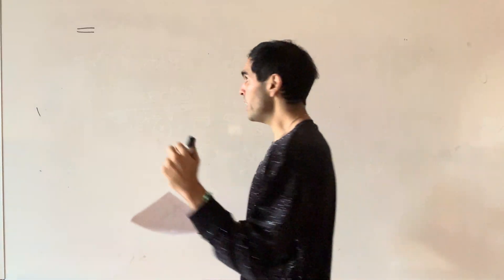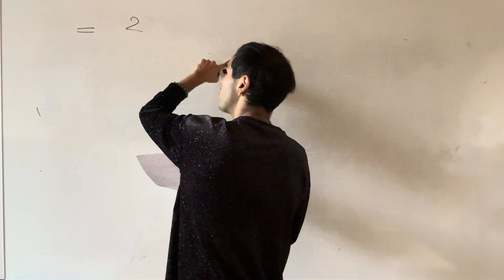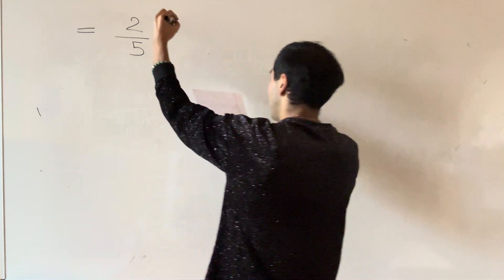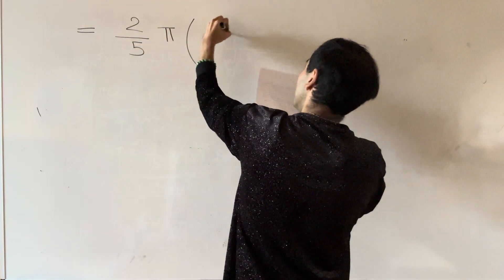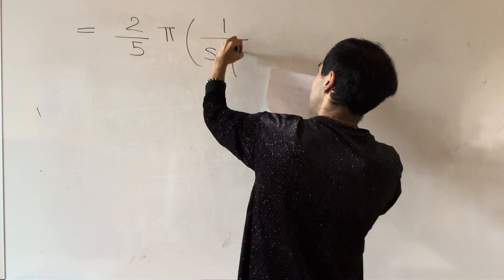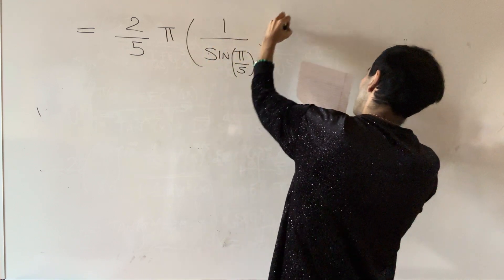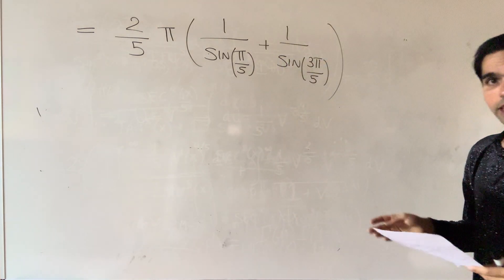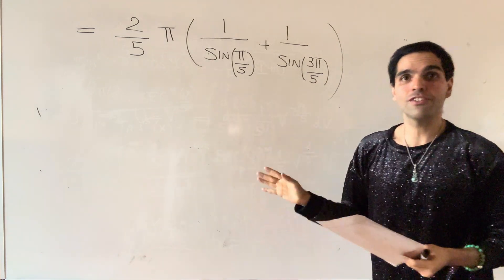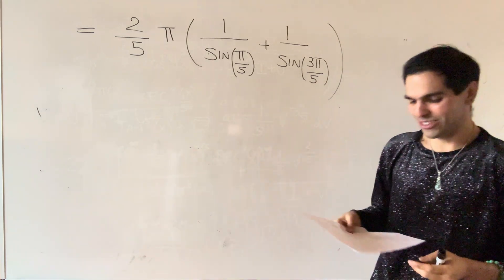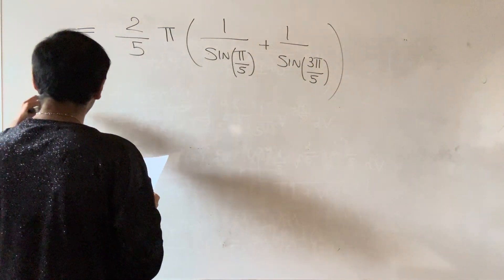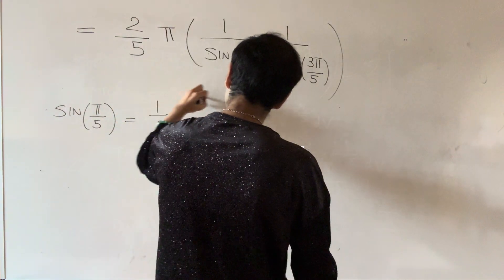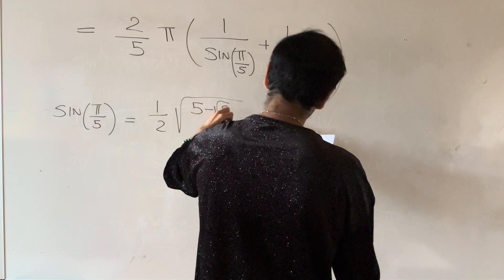We still have the factor of two from the numerator and five from the denominator. The pi comes from pi over sine of pi m. So we get two-tenths times pi over sine of pi over five, plus pi over sine of three pi over five. Now, sine of pi over five can be evaluated and equals one-half times the square root of five minus the square root of five over two.